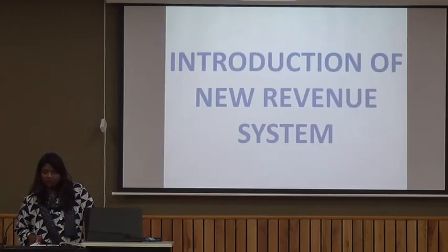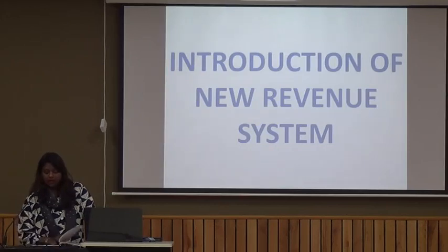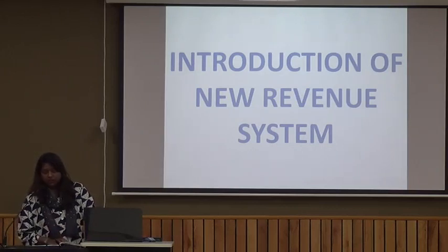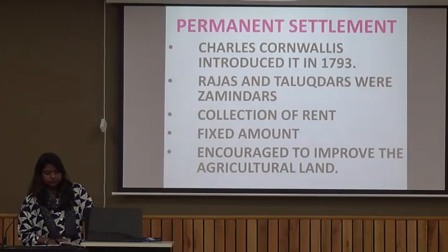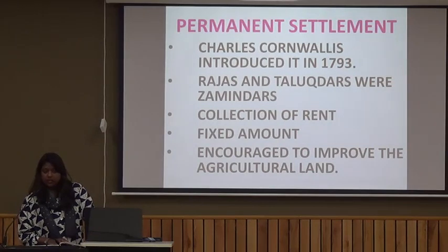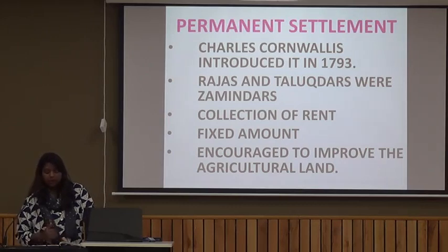After that, the company had to think of certain measures so that they could gain some money. With this in mind, they introduced a new revenue system. The first revenue system introduced by the British was the Permanent Settlement. This settlement was introduced by Charles Cornwallis in the year 1793. In this system, Rajas and Talukdars were recognized as Zamindars, meaning mediators.